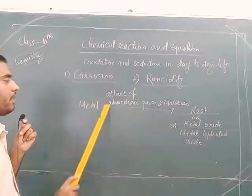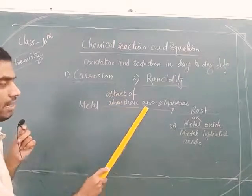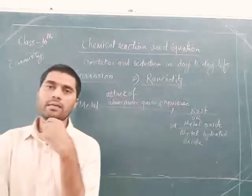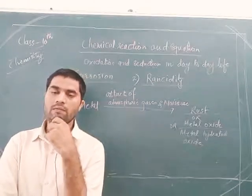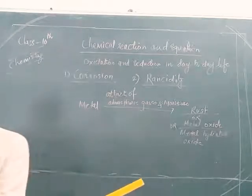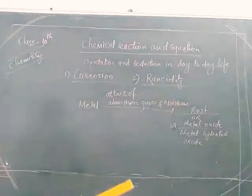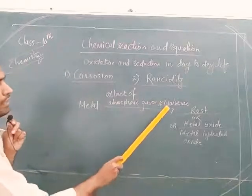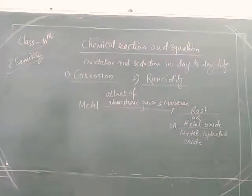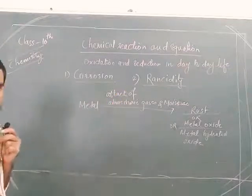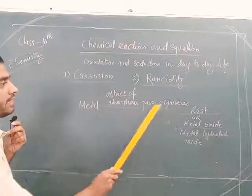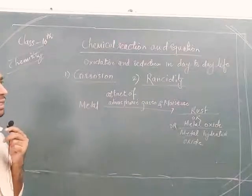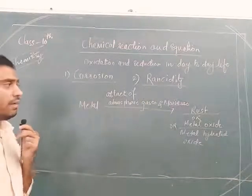When metal is kept open in the air, there is an attack of atmospheric gases. The atmosphere contains many gases like carbon dioxide, sulphur dioxide, hydrogen sulfide, and oxygen. The atmosphere also contains moisture. These are the two necessary conditions — atmospheric gases and moisture. If these two conditions are fulfilled, corrosion will definitely occur.